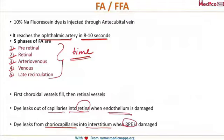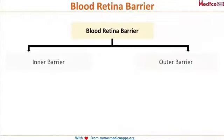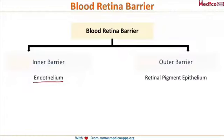The blood-retinal barrier, similar to the blood-brain barrier, has two components: the inner barrier and the outer barrier. The inner barrier is formed by the endothelium of the vessel, and the outer barrier is formed by the retinal pigment epithelium — this can sometimes be asked as an exam question.